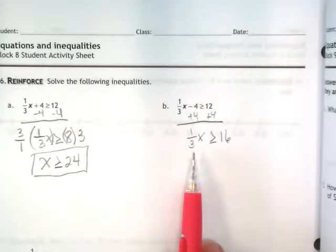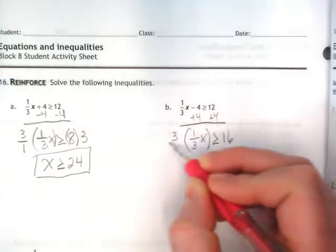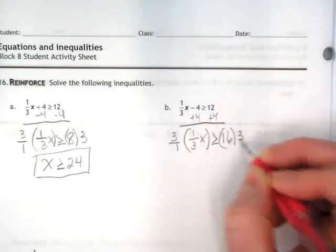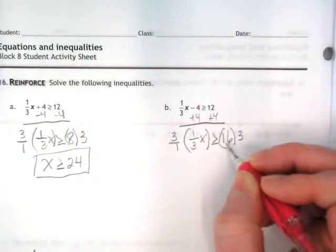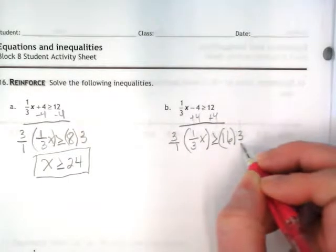To get that x by itself, I need to multiply by the opposite. The opposite of 1 third is, again, 3 over 1. I don't have to make it 3 over 1 on the right side because I'm multiplying a whole number, and I can leave the 1 invisible here.